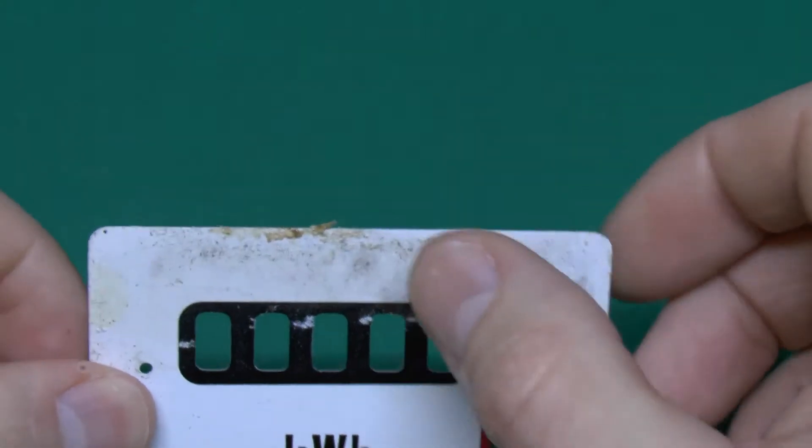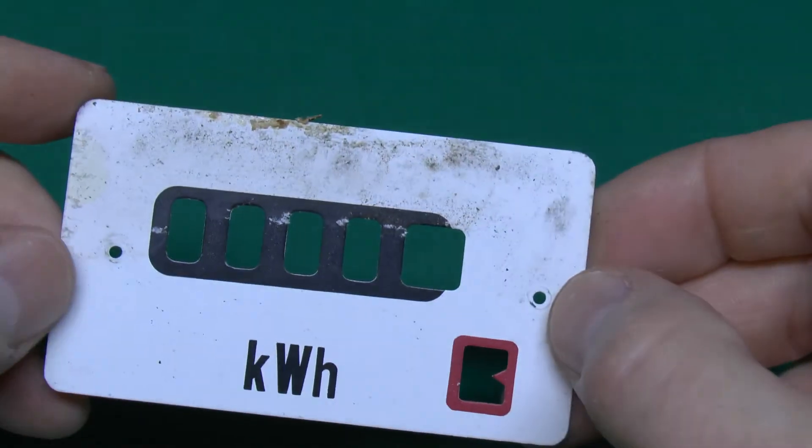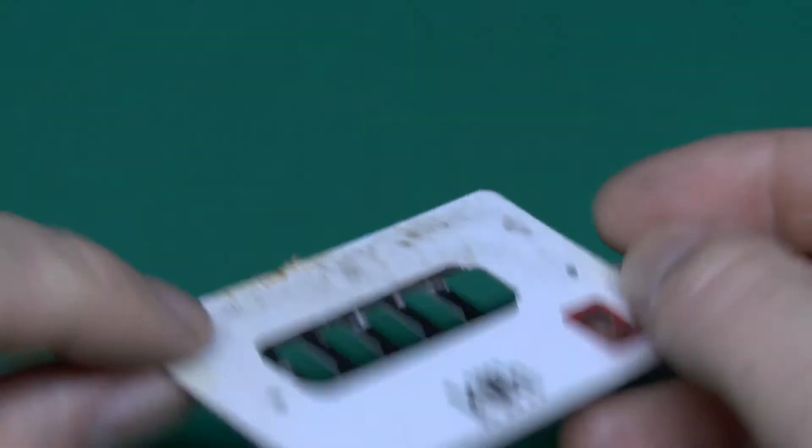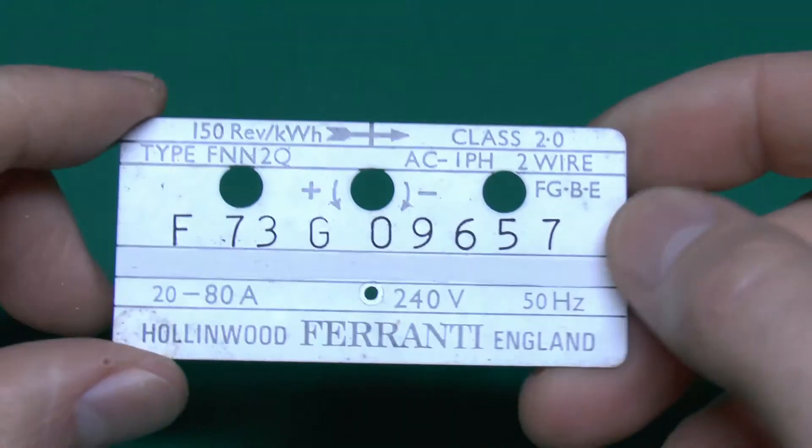The front plate, as you can see, has quite a bit of corrosion on that top edge. It's also absolutely filthy. Goodness knows where this has actually been in its previous life, but it's certainly in a right state.